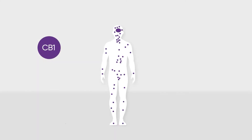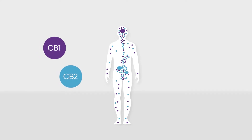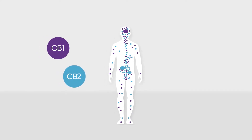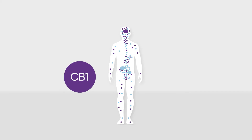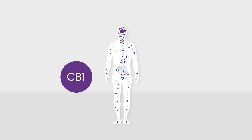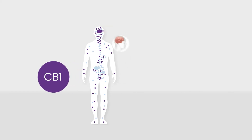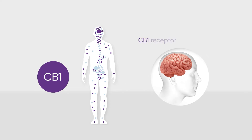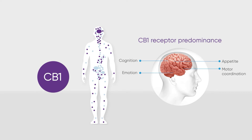CB1 and CB2 cannabinoid receptors are expressed throughout the human body. CB1 receptors are expressed abundantly in the brain of vertebrates, and THC's ability to attach to CB1 receptors explains many of its psychotropic and euphoriant effects.